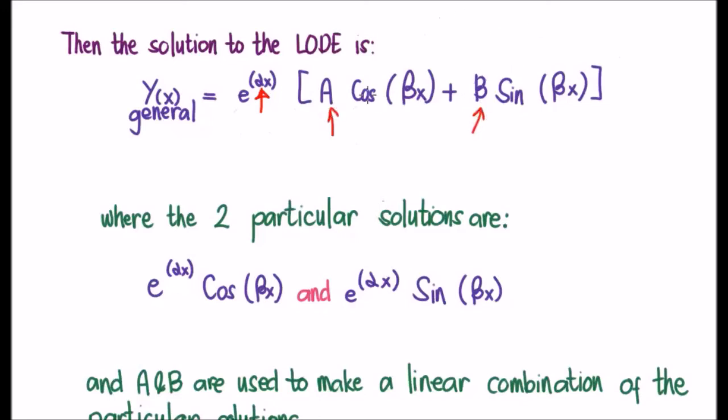These are to allow us to take a linear combination of cos beta x and sine beta x. Notice in both occasions that is plus beta. In other words, we're really taking just the lambda plus solution.